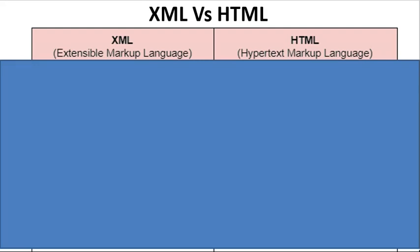Hello everyone. In this video we will see the difference between XML and HTML. XML means extensible markup language and HTML means hypertext markup language. Both are markup languages.